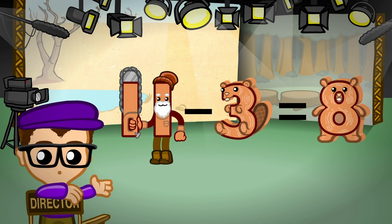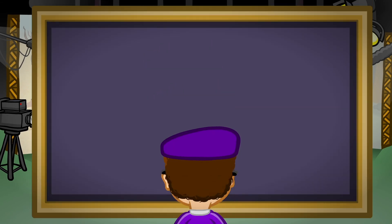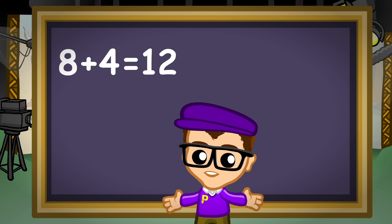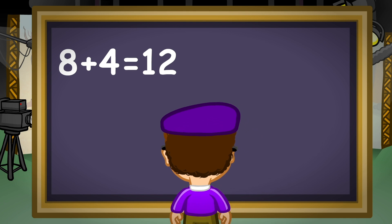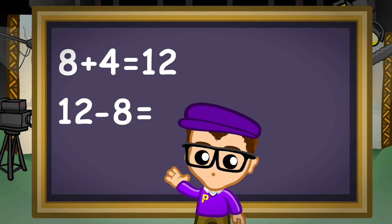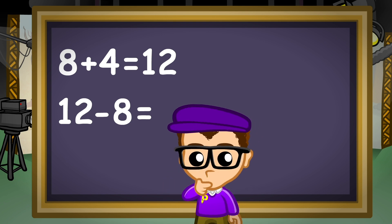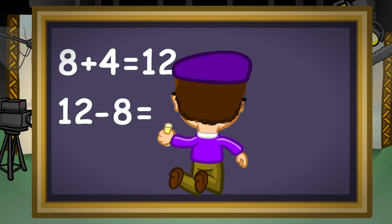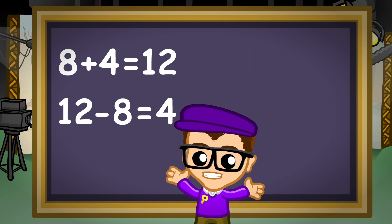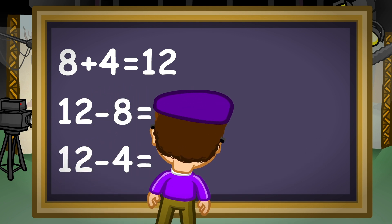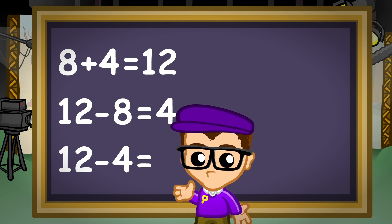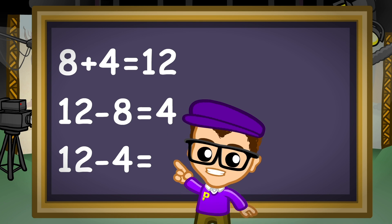Now you try a few. 8 plus 4 equals 12. So... 12 minus 8 equals... 4! Right! 4! And... 12 minus 4 equals... 8! That's right! 8!